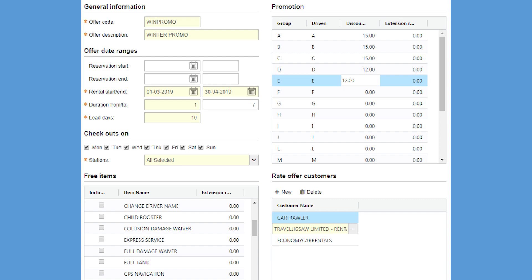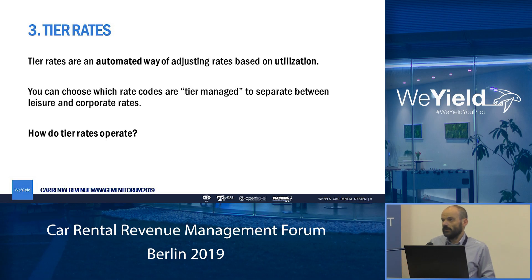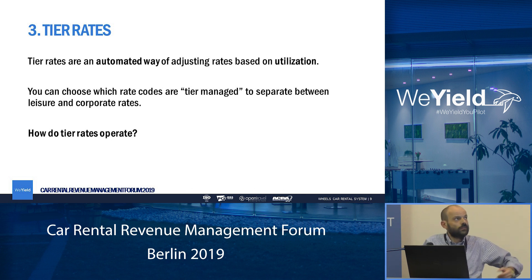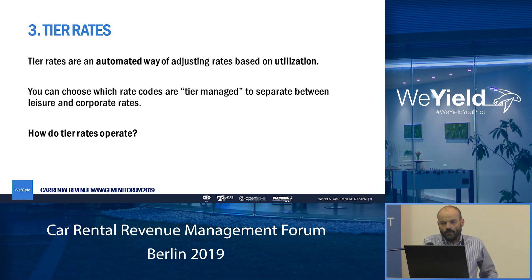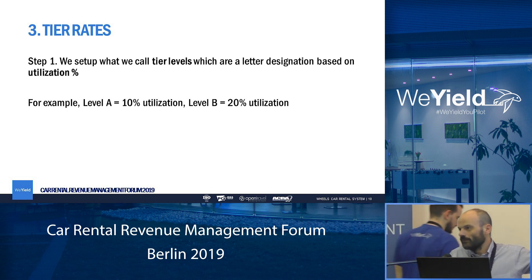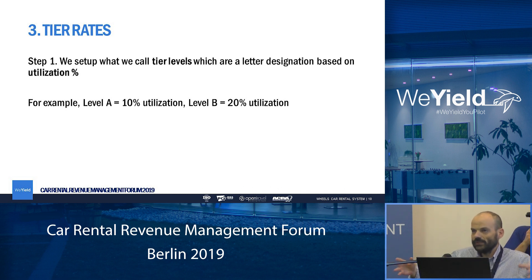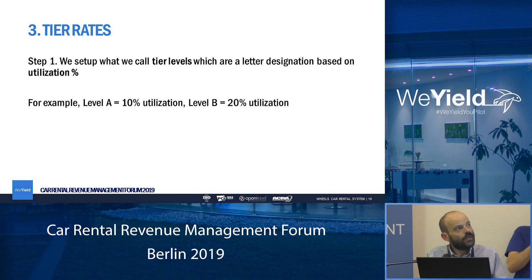Now let's go to dynamic pricing — what we call T-rates. T-rates is our own approach for adjusting rates based on utilization. T-rates usually apply on the leisure market, because with corporate business we have agreed prices that we can't move up or down. We define T-rates using tier levels, which are letters assigned based on the utilization rate: A is 10% utilization, B is 20%, C is 30% — and this is something you can configure as you want.